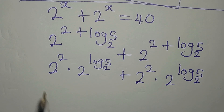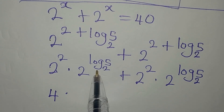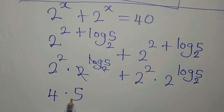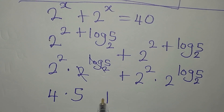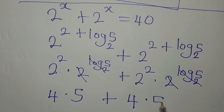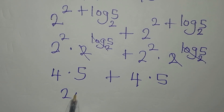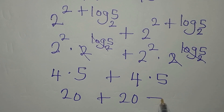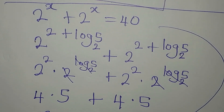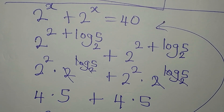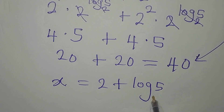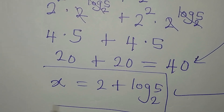Now 2 to the power of 2 is 4, multiplied by 2 to the power of log base 2 of 5. Since the base and the log base are the same, they cancel, leaving just 5. So we have 4 times 5, plus another 4 times 5. That is 20 plus 20, which equals 40 — the same 40 from the original equation. This confirms that x equals 2 plus log base 2 of 5 satisfies the equation.